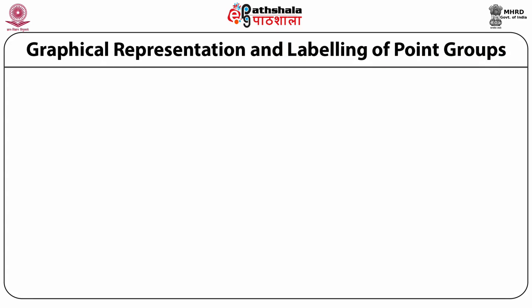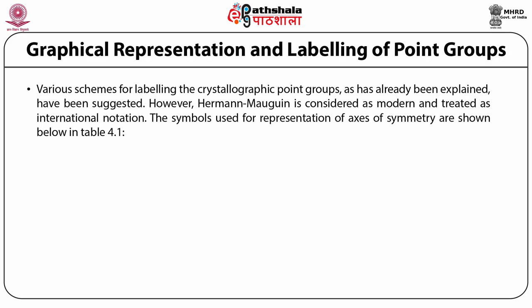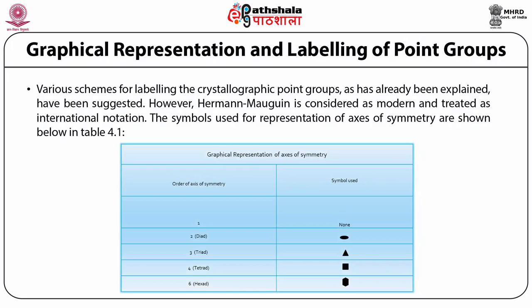Graphical representation and labeling of point groups: there are various schemes for labeling the crystallographic point groups, and Hermann-Mauguin is considered modern and international notation. The symbols used for representation of axes of symmetry are shown in Table 4.1, which shows graphical representation of axes of symmetry. It is divided into two columns: one refers to the order of axis of symmetry, and the other to the symbol used for the same.